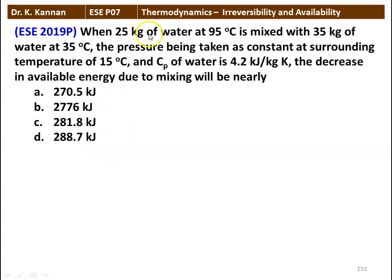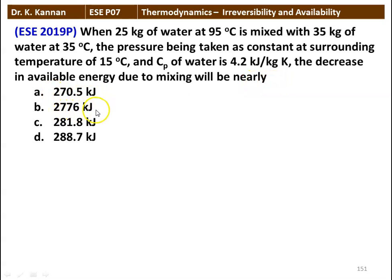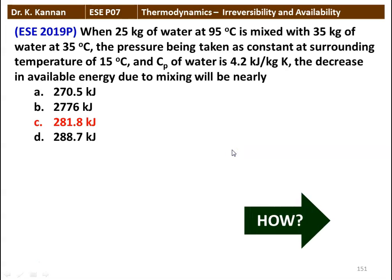The next question: when 25 kg of water at 95 degrees Celsius is mixed with 35 kg of water at 35 degrees Celsius, at constant pressure with surrounding temperature 15 degrees Celsius and Cp of water equals 4.2 kilojoules per kilogram Kelvin, the decrease in available energy due to mixing will be — options: 270.5, 2776, 281.8, and 288.7 kilojoules. The answer is 281.8 kilojoules.